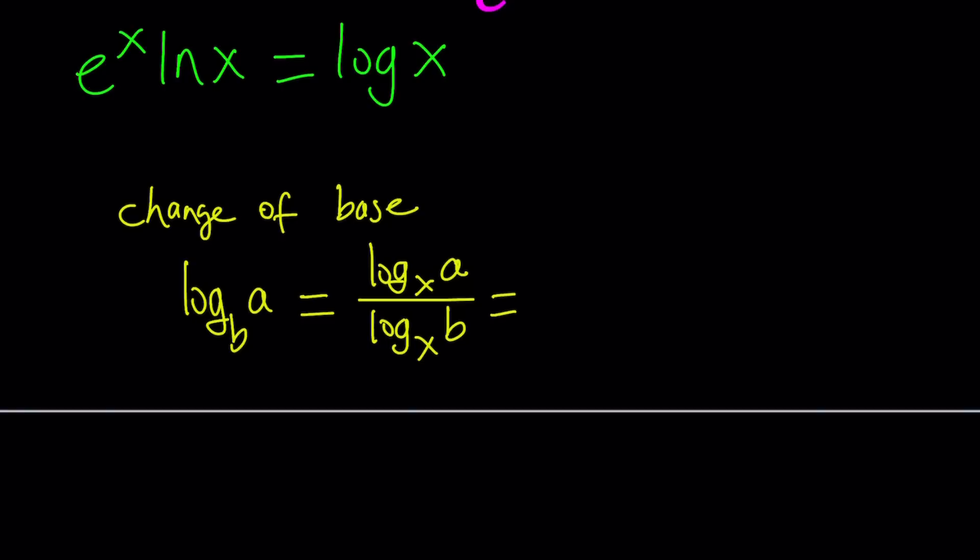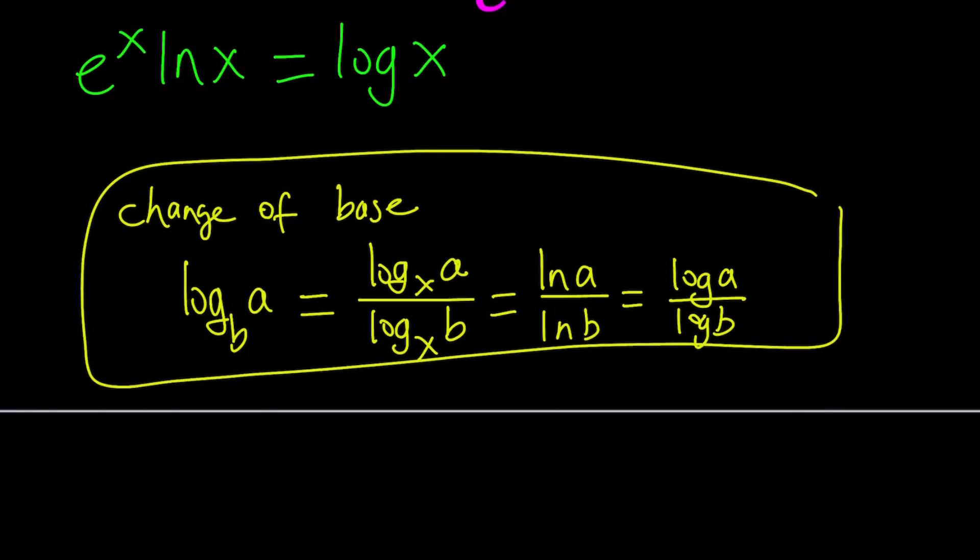If you're using natural log, then this looks like ln a over ln b. Or if you're using base 10, it looks like log a over log b. But I usually prefer the ln. This is change of base and we're going to apply it to our problem.